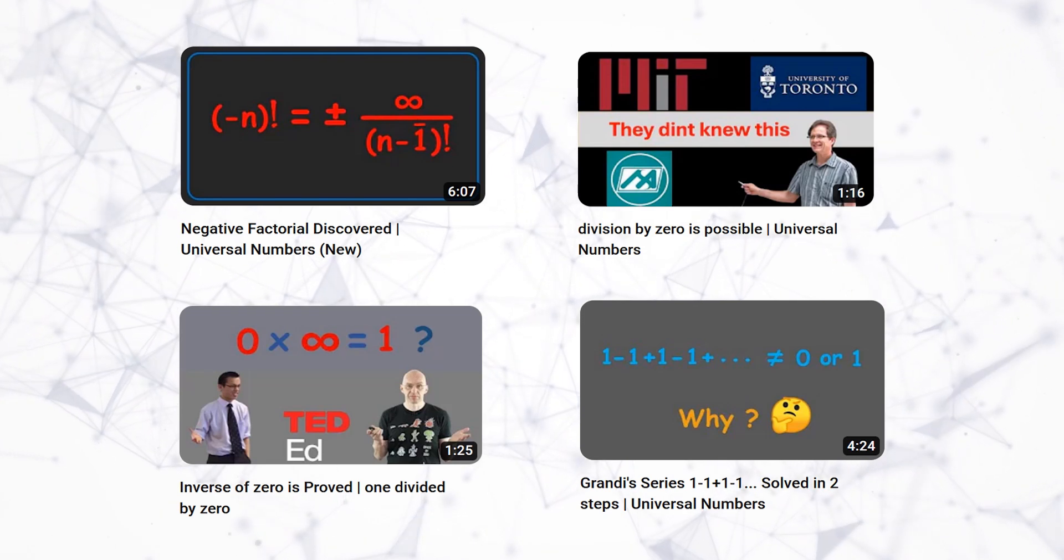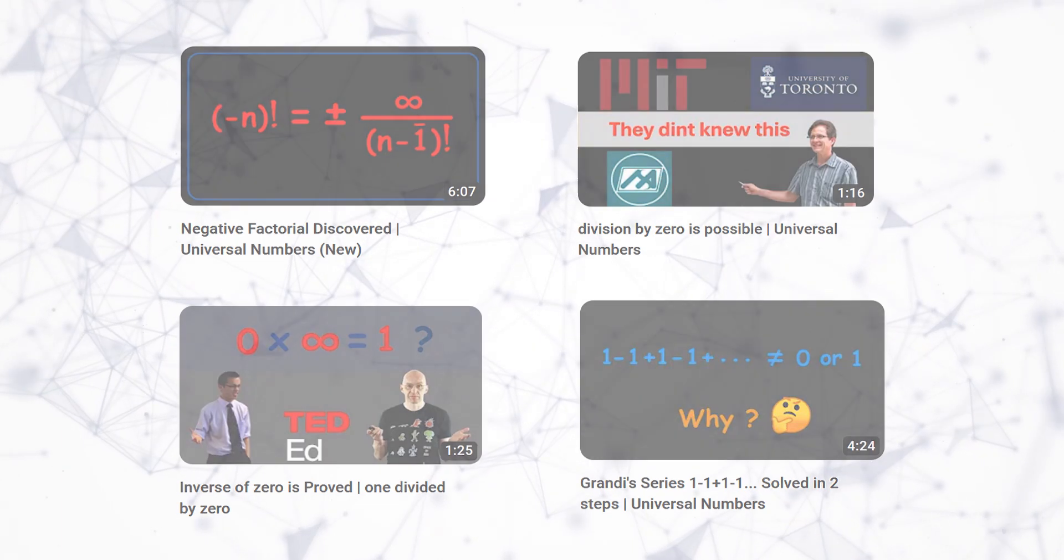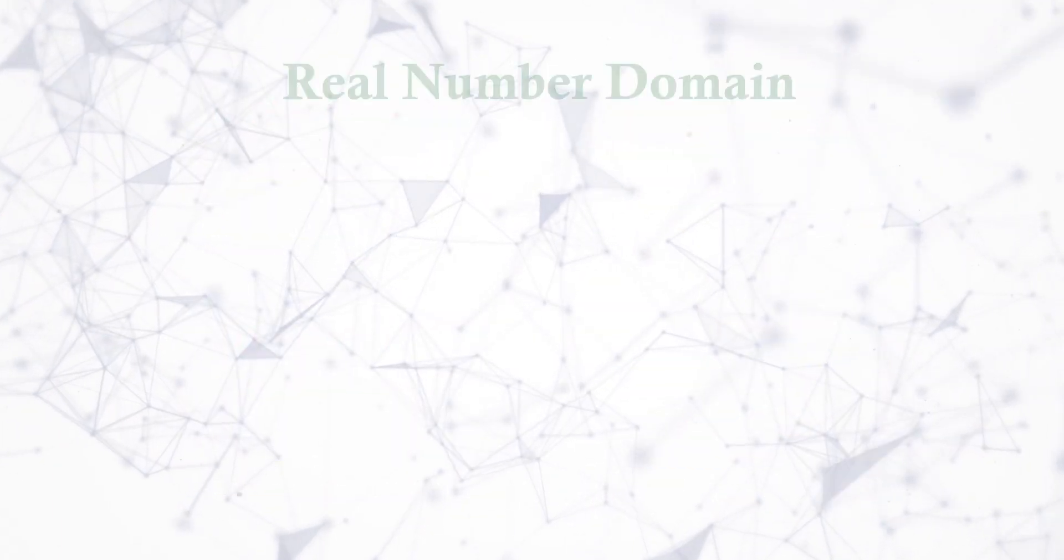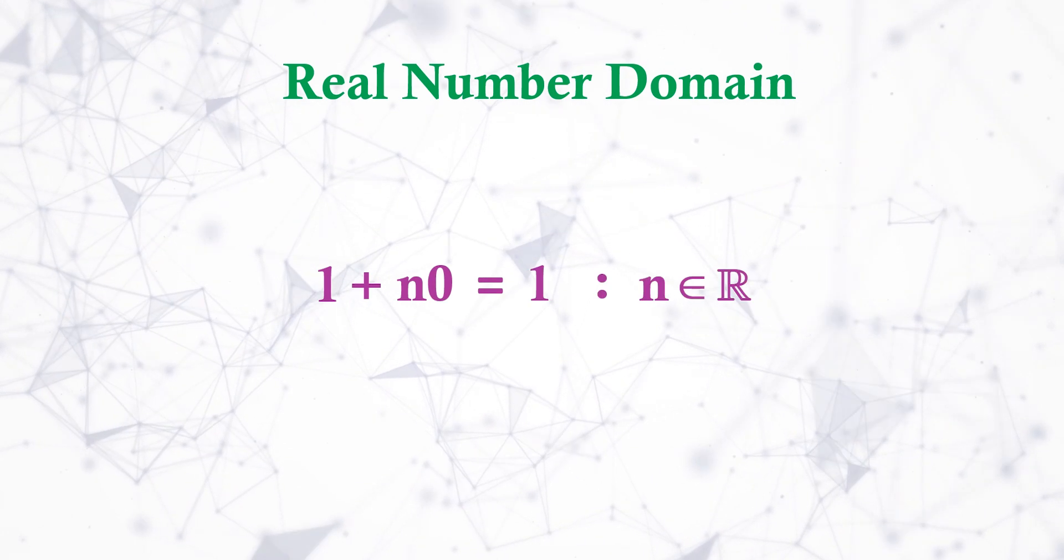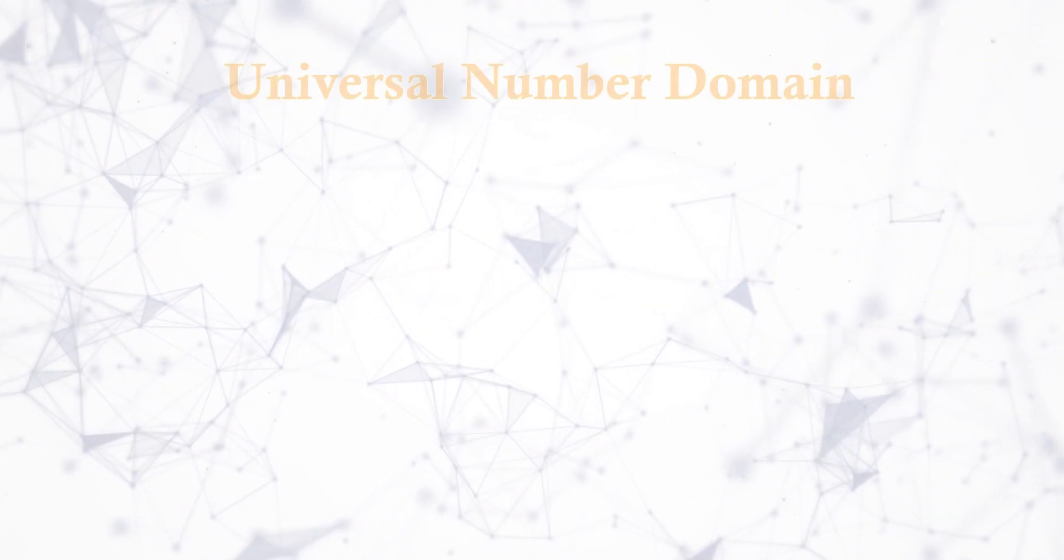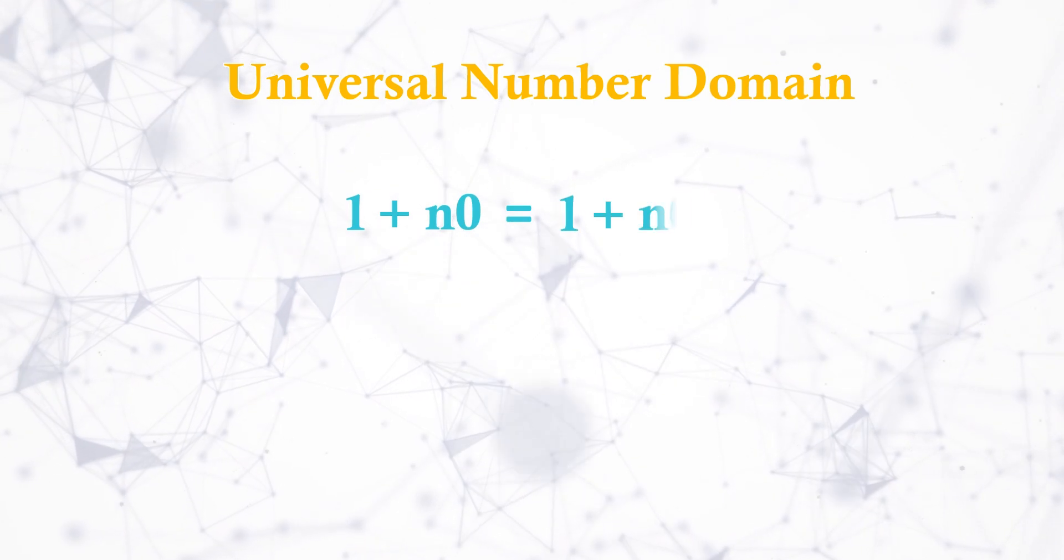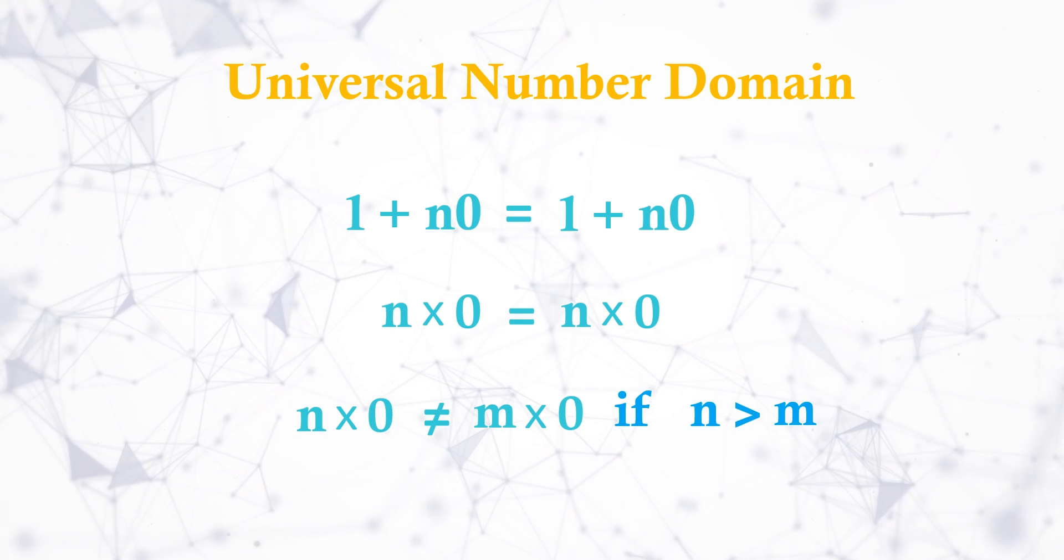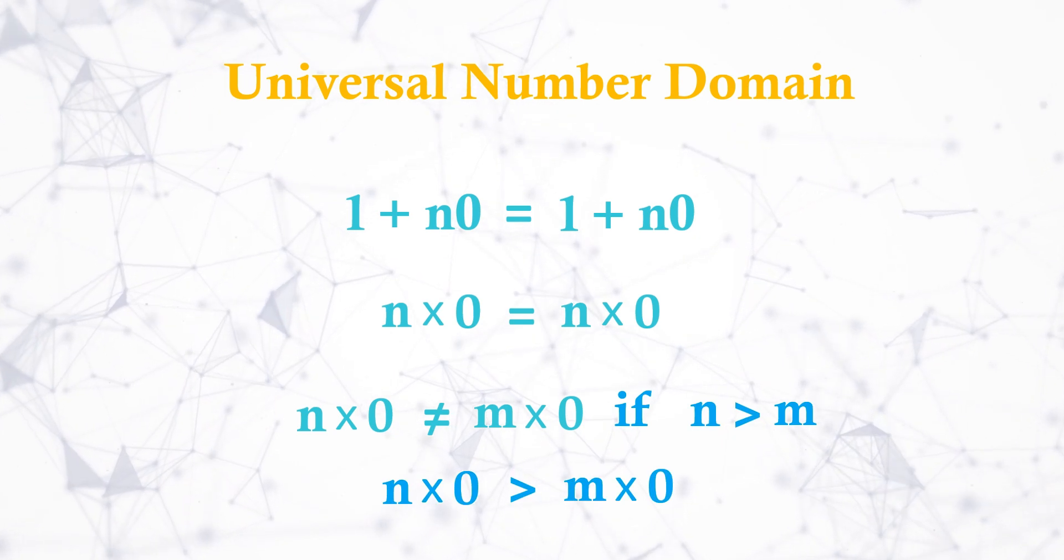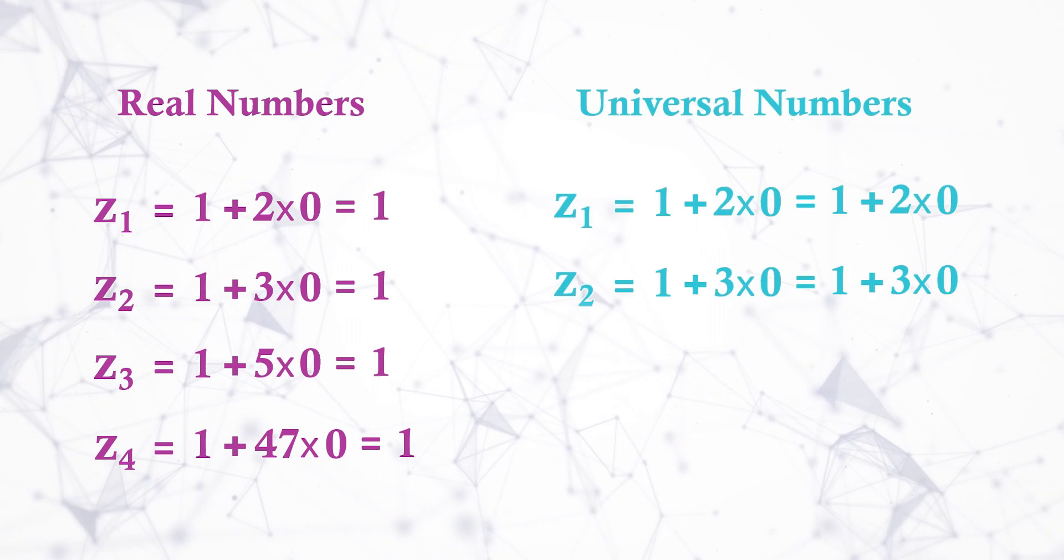And here we will use another beautiful and simple way to prove or observe the same that is directly related to Pi and E. 1 + n × 0 = 1 in real numbers. But in universal numbers 1 + n × 0 = 1 + n × 0 itself. This cannot be further reduced. So with such rules we can express as this in its respective domains.